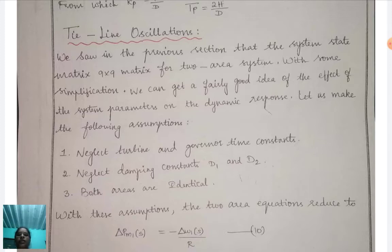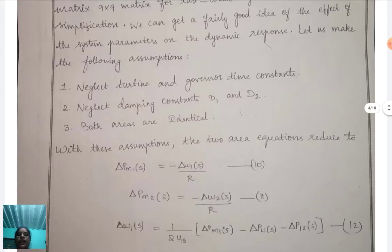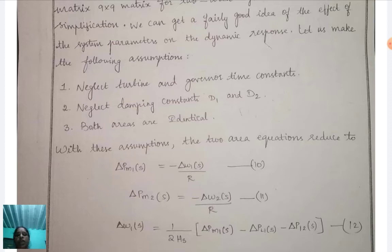Now let us make the following assumptions. First, neglect turbine and governor time constants. Second, neglect damping constants D1 and D2 — D1 and D2 are the damping constants. Third, both areas are identical. With these three assumptions, we can derive the tie-line oscillation equations for the two-area system.